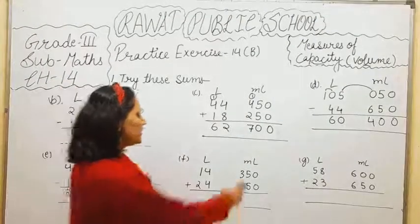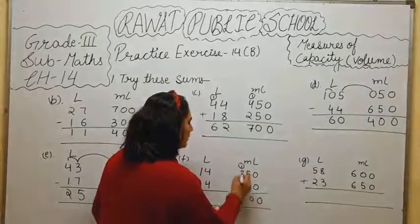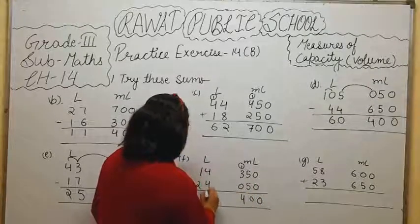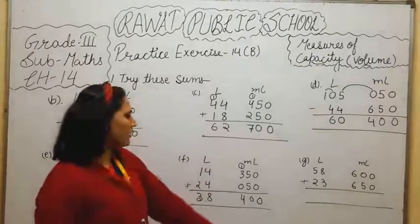Now, we have to add question number F. 0 plus 0, 0. 5, 5, 10. 0 carry 1. 3 plus 1, 4. 4 plus 4, 8. 2 plus 1, 3. 38 liter and 400 ml.